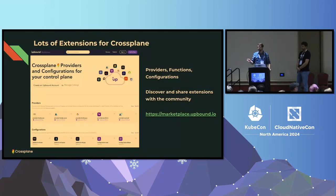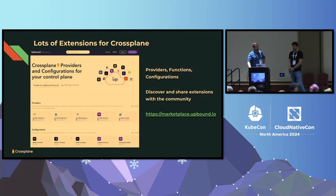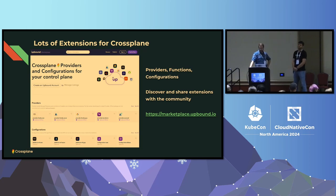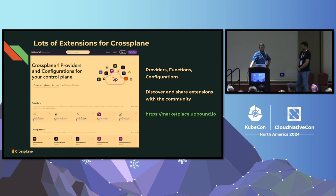We've talked about AWS a lot, but there are a bunch of extensions for Crossplane. All the major cloud providers are supported, on-premises stuff, lots of different environments and extension types. There's a pretty vibrant ecosystem. There's a place to discover and start consuming them and share your own — you can find that in the Marketplace at marketplace.upbound.io.